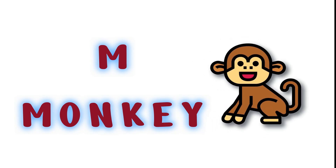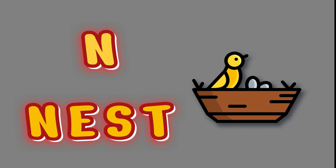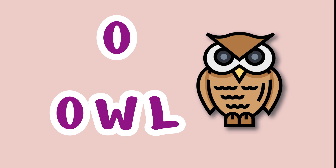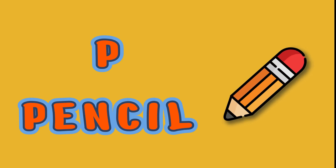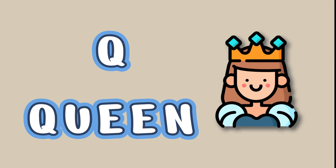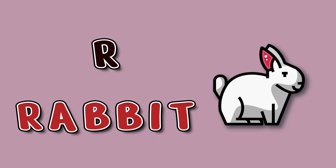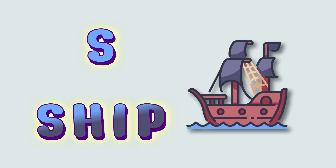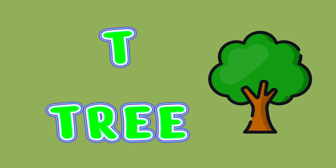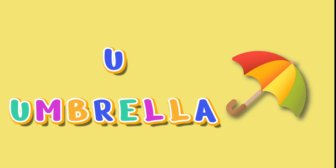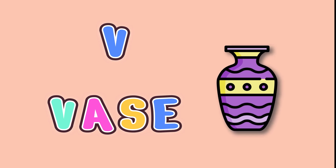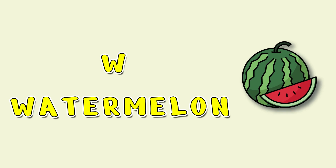M for Monkey. N for Nest. O for Owl. P for Pencil. Q for Queen. R for Rabbit. S for Ship. T for Tree. U for Umbrella. V for Vase. W for Watermelon.